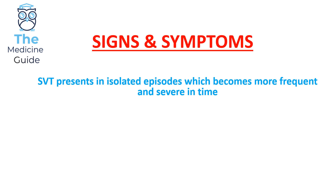The average duration of an SVT episode is typically around 10 to 15 minutes, though episodes could last from a few seconds up to a few hours. The key things to remember are that SVT episodes are recurrent, have an average duration of 10 to 15 minutes, and have an abrupt onset and offset.